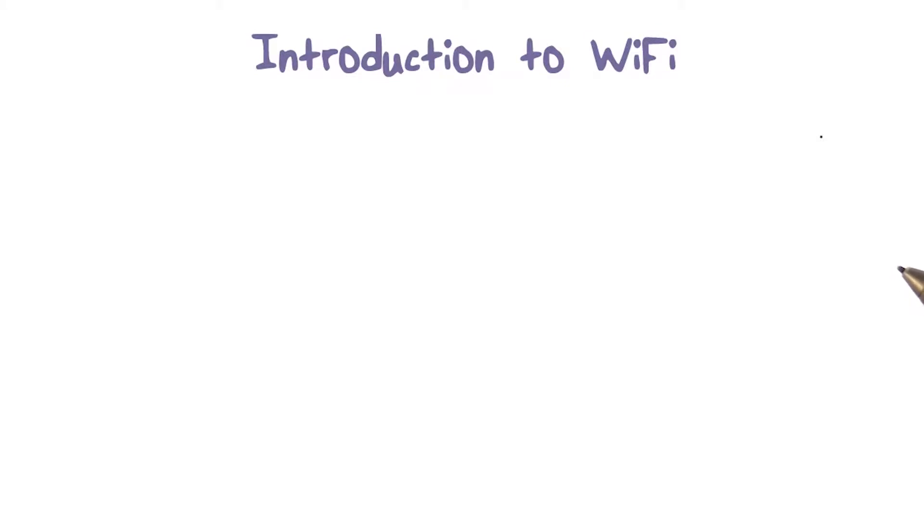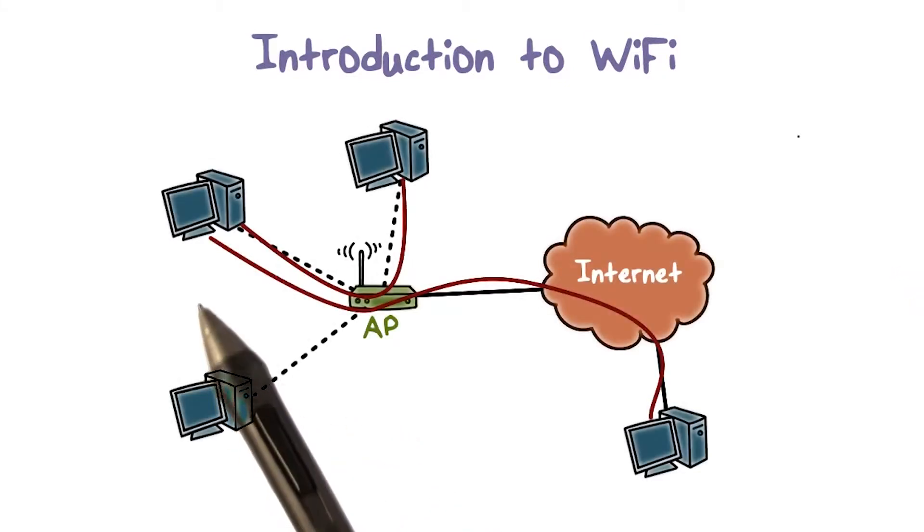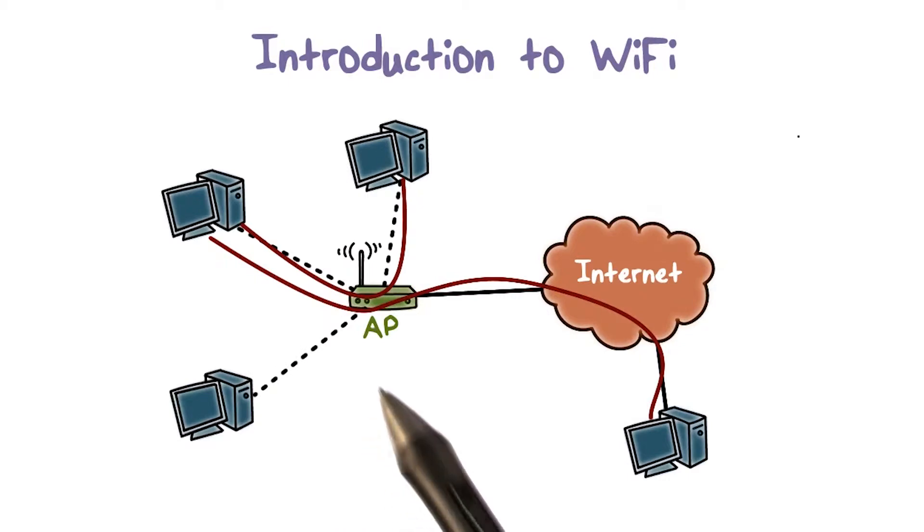Let's first briefly review the WiFi technology. A typical use of WiFi is to allow personal computers or devices enabled with WiFi in a locale, such as a home, to access the internet through the access point or AP.